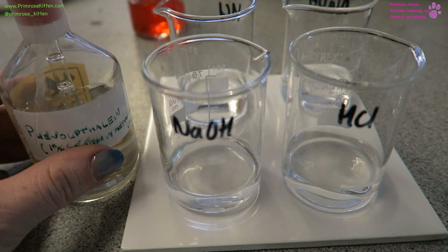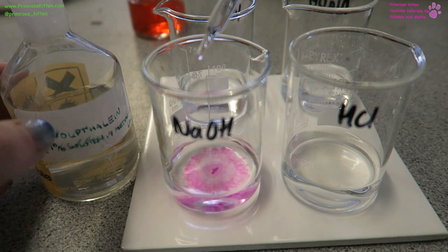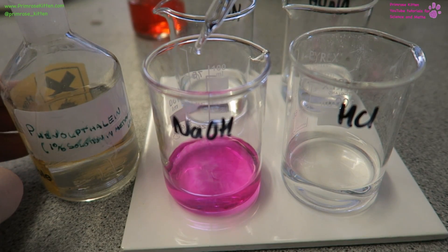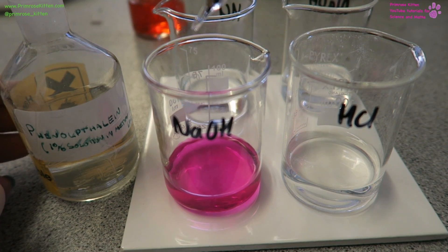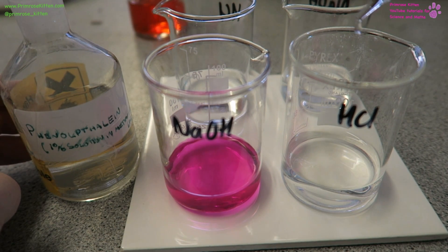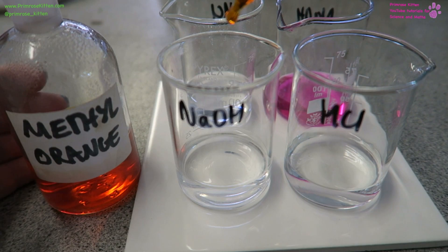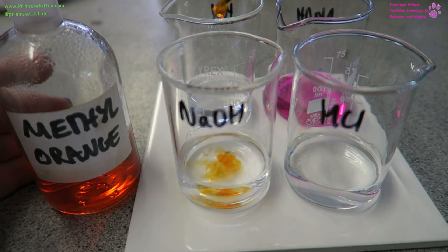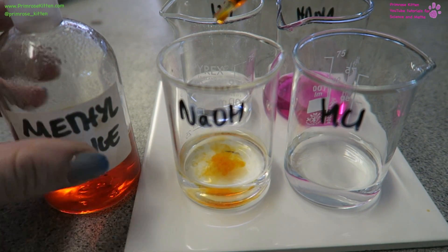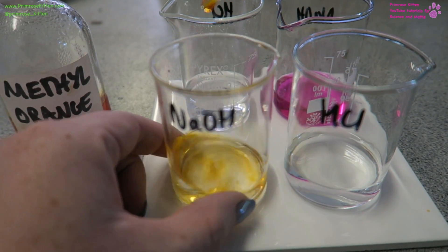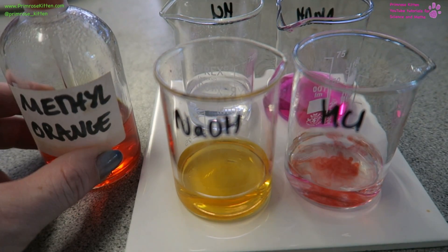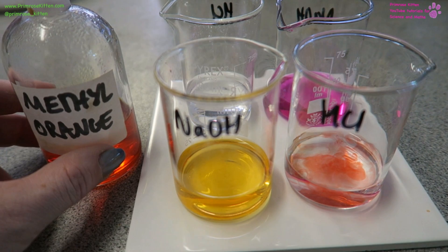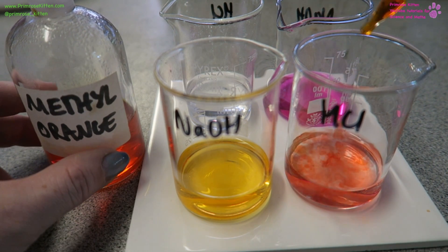There are two indicators you can use for titrations. Phenolphthalein, which is the one you're seeing here, which in an alkali will be bright pink, and in an acid will be clear or colorless. Or methyl orange, which in an alkali you can see has this yellowy color, and in an acid will be bright red, giving us a neutralization point where it is an orange color.